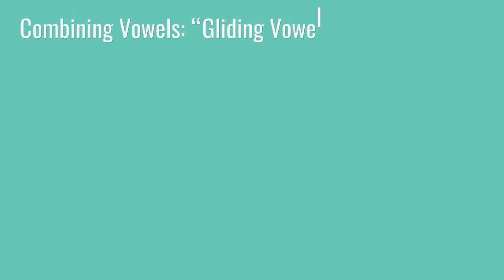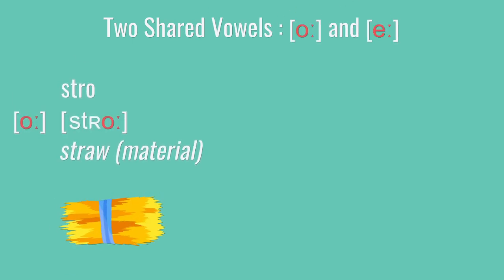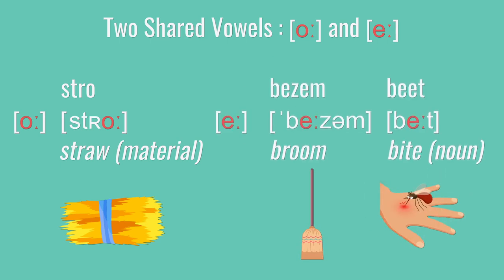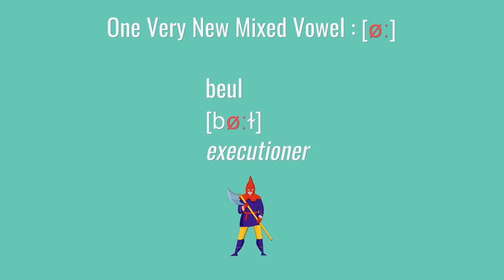After that, we introduced you to the Dutch gliding vowels and diphthongs. Two of those were basically the same as English diphthongs: O as in stro, and E as in bezem or beet. Then we covered a gliding vowel that sounded pretty foreign — U as in beul. Your tongue follows the path of the familiar sounding diphthong E, but you round your lips: E, U, beel, beul.